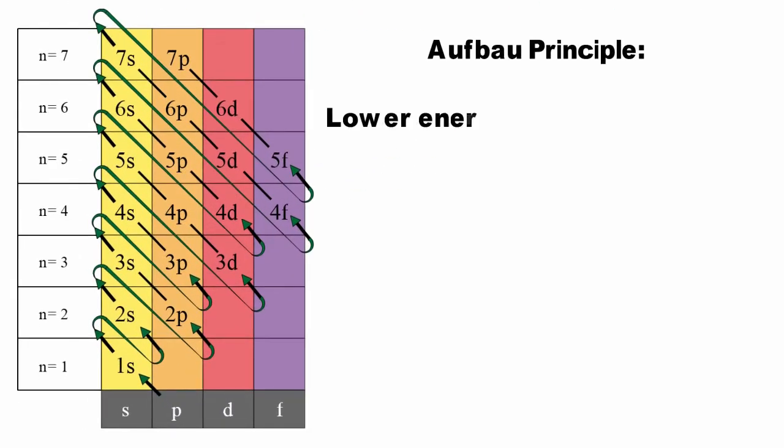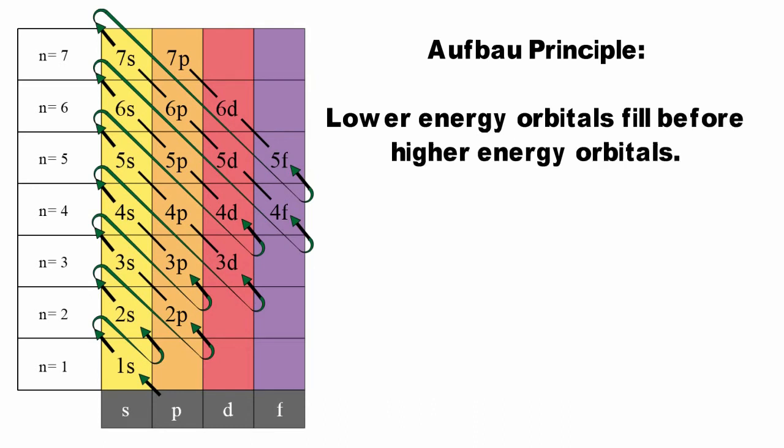The general order in which electrons fill orbitals in an atom to achieve the ground state configuration is 1s, 2s, 2p, 3s, 3p, 4s, 3d, 4p, 5s, 4d, 5p, 6s, 4f, 5d, 6p, 7s, 5f, 6d, 7p.